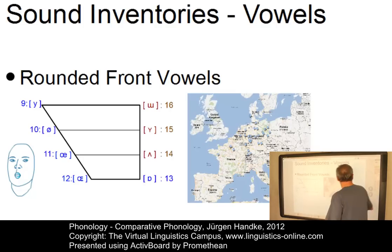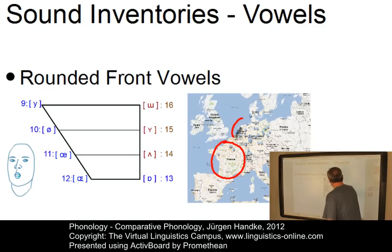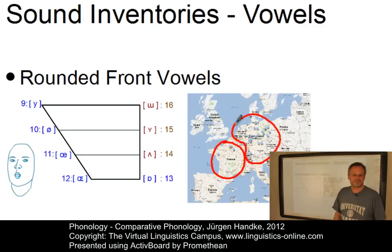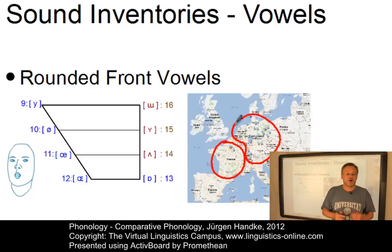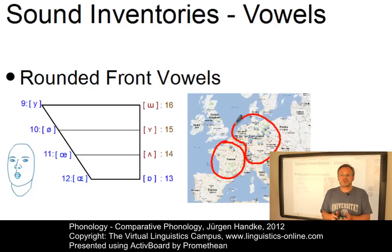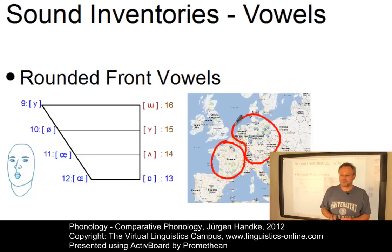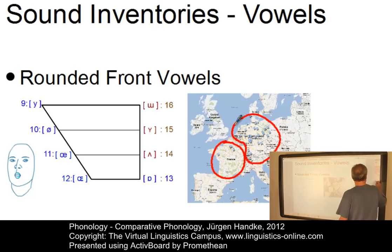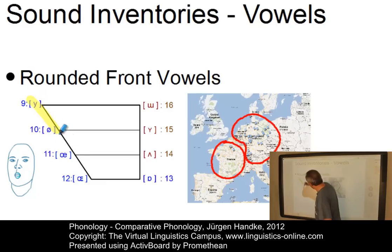If we confine ourselves to the Indo-European languages, for example, we will find that French is the only Romance language with rounded front vowels, such as U as in 'rue'. And some Germanic languages, most significantly German, also have rounded front vowels: U as in 'lüge' or Ö as in 'mögen'. English, by contrast, has none of these rounded front vowels.